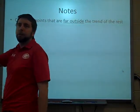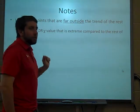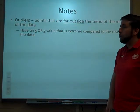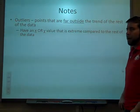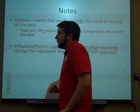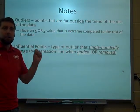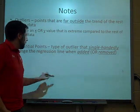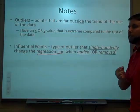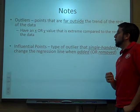So, outliers, points that are far outside the trend of the rest of the data. That should be nothing new to you. You should know what an outlier is by now. So, the thing about it is that it has an x or a y value that is extreme compared to the rest of the data set. So, like that mentally retarded child, their x and y were quite a bit off. For the other kid, his y value was pretty far off, right? Way higher than we thought, but his x value had nothing wrong. His x value was right there with everything else. But, he's still an outlier because, again, his y value is quite different. But, influential points, they're a type of outlier that single-handedly changes their regression line when added or when they're removed.